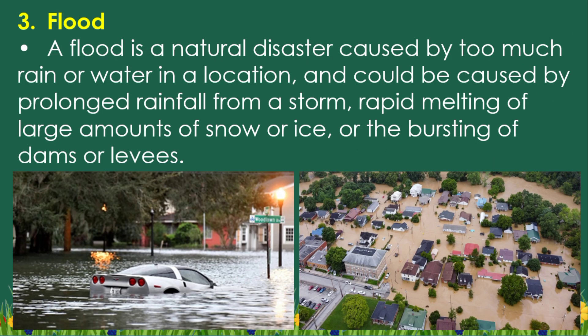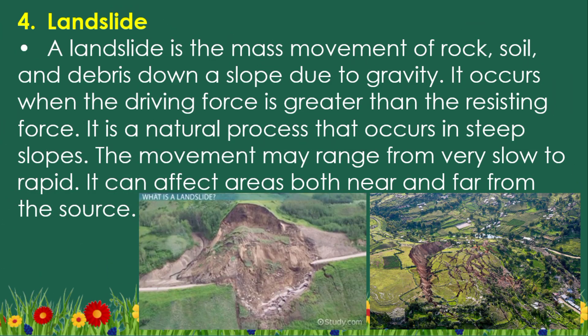Type 3: Flood. A flood is a natural disaster caused by too much rain or water in a location, and could be caused by prolonged rainfall from a storm, rapid melting of large amounts of snow or ice, or the bursting of dams or levees.